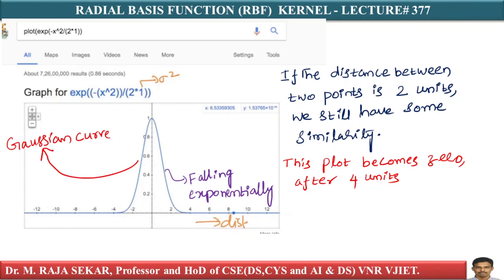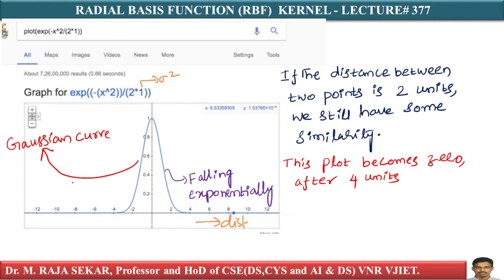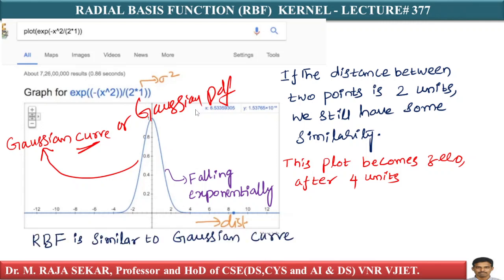This particular curve is falling exponentially and is very similar to a Gaussian curve. We already discussed normal distribution or Gaussian distribution. The RBF kernel function itself looks very much like a Gaussian curve or normal PDF. This is what happens for sigma equal to 1.